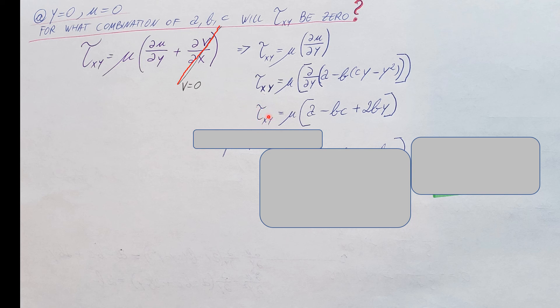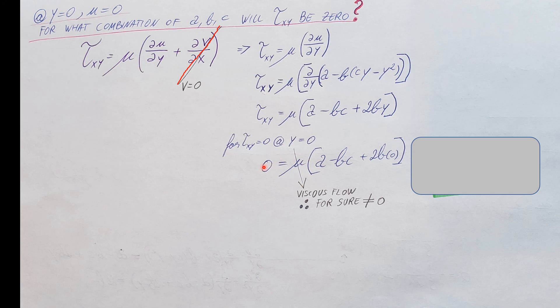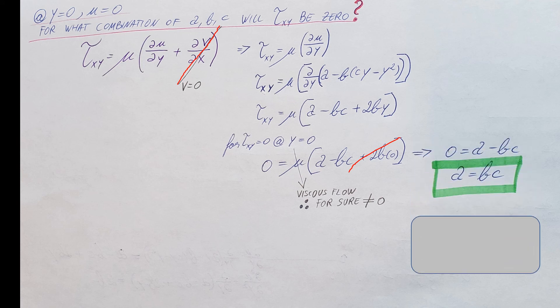Here it is. But, they want us to make sure that this shear stress is 0, and not wherever, only at y equals 0. So, let's plug these two into this function. Here it is. Now, that's going to give us 0 equals mu times a minus bc plus 2b times 0. So, this term is gone. Let me cross it out. There you go. This term is gone. That leaves us with only these two. And, dynamic viscosity is not 0 for sure. They told us that this is a viscous flow. So, that means that whatever we have in the parenthesis needs to be 0. Therefore, 0 equals a minus bc. Or, if you want to rewrite it, a equals bc. Here you go. This is the final answer for our second question.